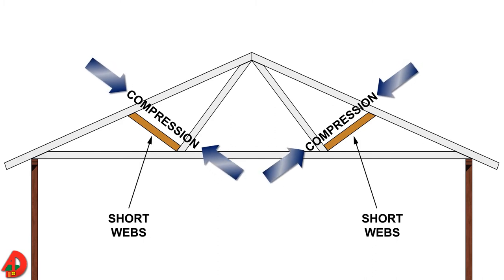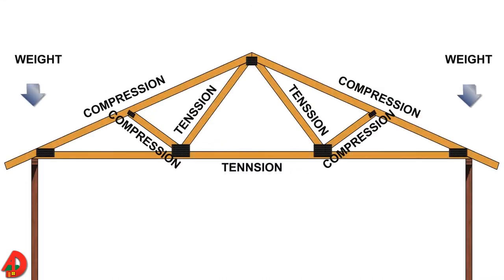This exerts a downward, pushing-together force or compression on short webs. The overall design of trussed roof transfers the entire load of the roof weight, snow load, and wind load down through the exterior walls to foundation. The balance of tension and compression gives the truss its ability to carry heavy loads and cover wide spans.